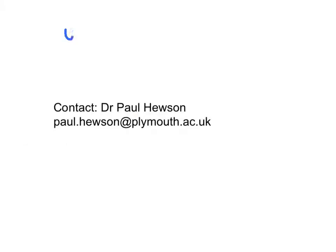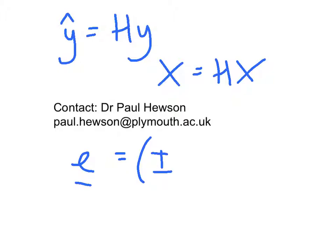Let's summarize these three points. Y hat is the hat multiplied by y. X is the hat multiplied by x. And the residuals are this identity matrix minus hat multiplied by y.